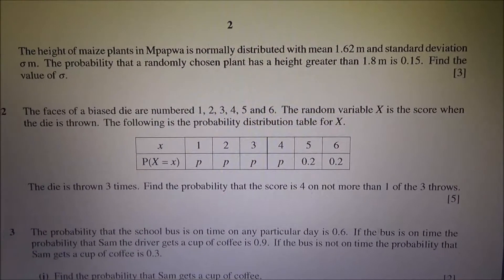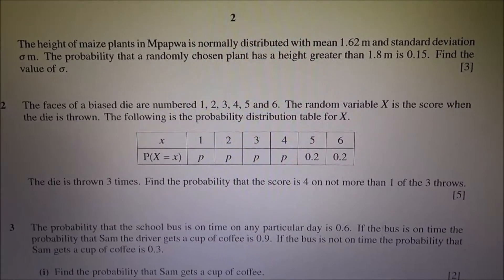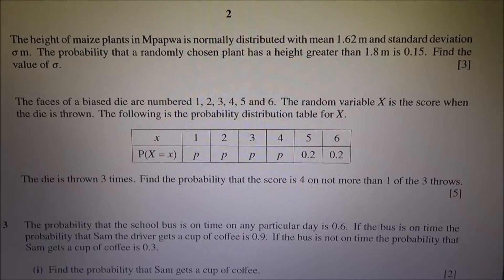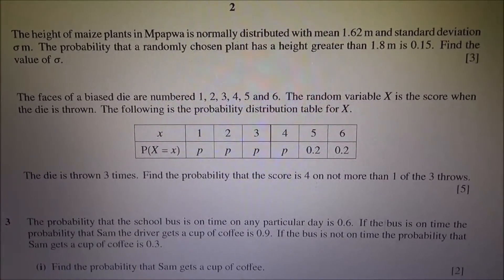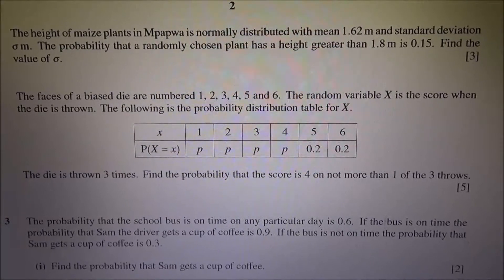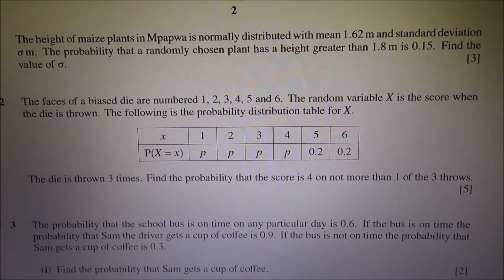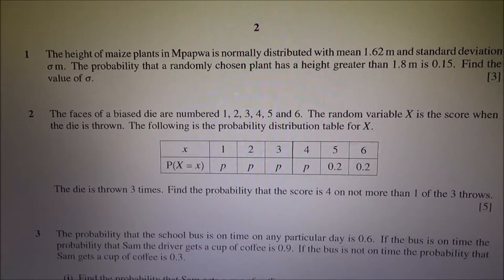The height of maize plots in Mpapua is normally distributed with mean 1.62 meters and standard deviation sigma meters. The probability that a randomly chosen plot has a height greater than 1.8 meters is 0.15. Find the value of the sigma, that is the standard deviation.